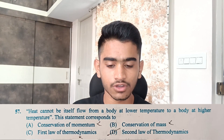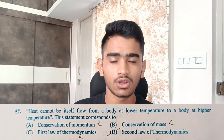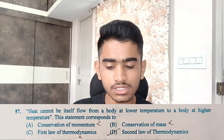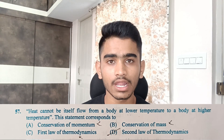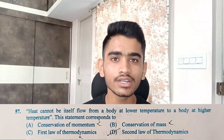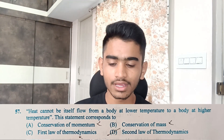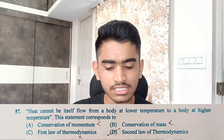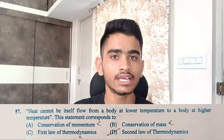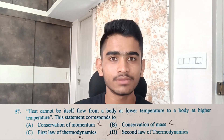Moving to the next option — conservation of mass — that is again a concept not related to thermodynamics and flow of heat, so I eliminated it. Option C was the first law of thermodynamics. I knew the first law: the change in internal energy equals the change in heat of the system — which is not what the question describes. So I eliminated that too. Once I understood these three options were definitely not the correct answer, I simply ticked option D and filled it in the OMR sheet. That's how easy it is when you understand the elimination method well.